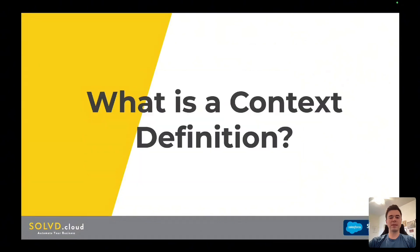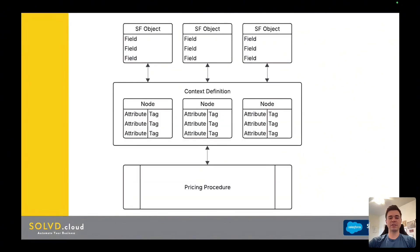So what is a context definition? A context definition is kind of like the data layer in between the Salesforce objects and the context of Revenue Cloud. What you'll really be working a lot with is the pricing procedure. If you're coming from CPQ, the pricing procedure is like the pricing waterfall on steroids — that's where all the calculations are going to happen.